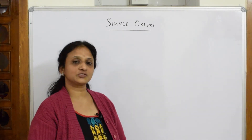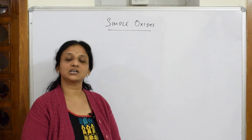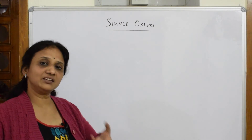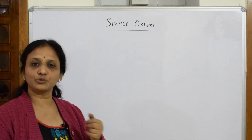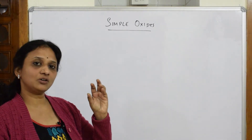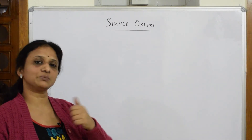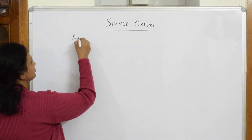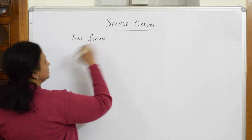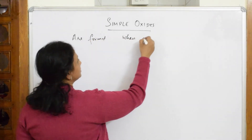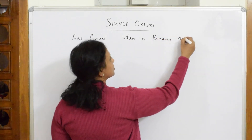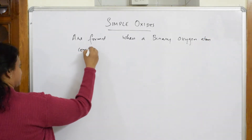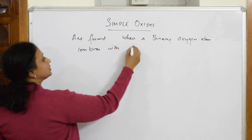Now we will finish off the compounds of oxygen by studying simple oxides. What actually is a simple oxide? Simple oxides are those where it is a binary compound — a combination of two elements together — where a binary oxygen atom combines with some other metal or element.